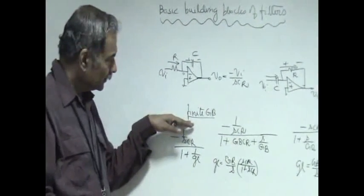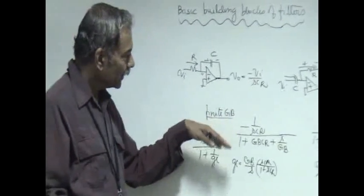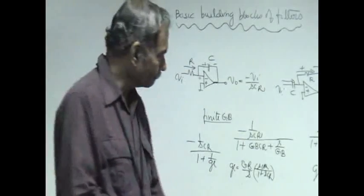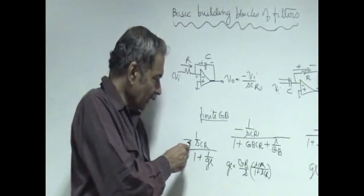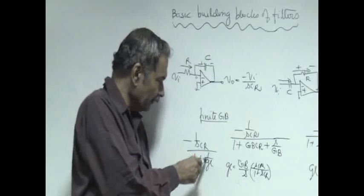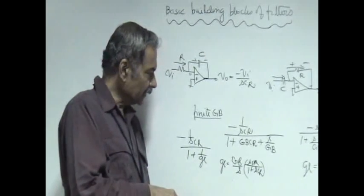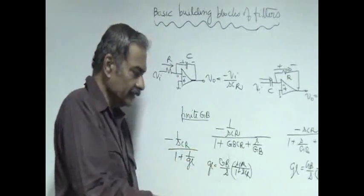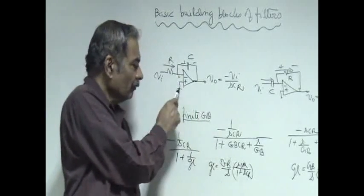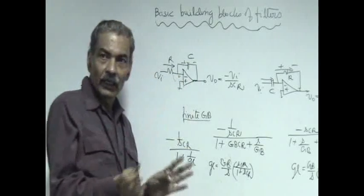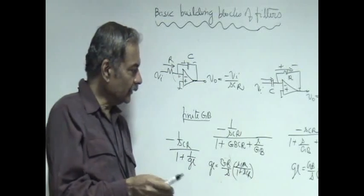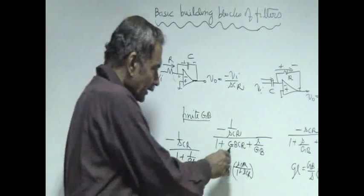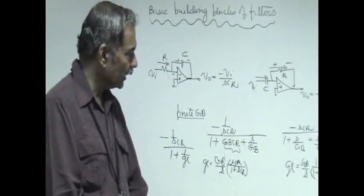Because of the finite gain-bandwidth product, these blocks are going to have their behavior changed, and that study is very important in deciding which building block is superior. When we account for this, the actual transfer function is minus 1/sCR divided by (1 + 1/g_L), where g_L is the loop gain. The loop gain is the gain of the op-amp, g_v, multiplied by sCR divided by (1 + sCR). This acts in the loop like a high-pass filter, and if you introduce this into the transfer function, the integration has an error — the magnitude error is controlled by g_v times sCR.